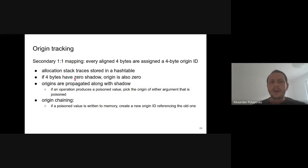It is sometimes hard to understand where uninitialized values come from. MSan has a mode in which it maintains a secondary mapping that assigns a four-byte origin ID to every aligned four bytes of application memory. Every time an uninitialized value is created on the stack or heap, the current stack trace is put into a hash table and the index is stored as the origin of every four bytes of that variable. For uninitialized values with zero shadow, the origin is also zero.